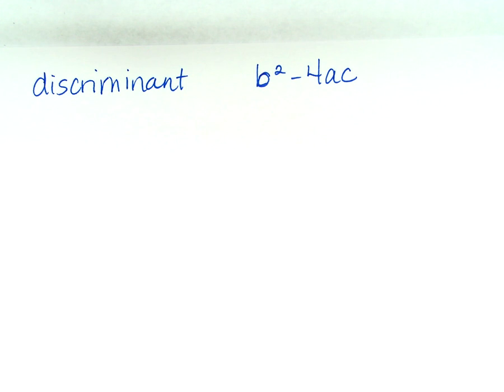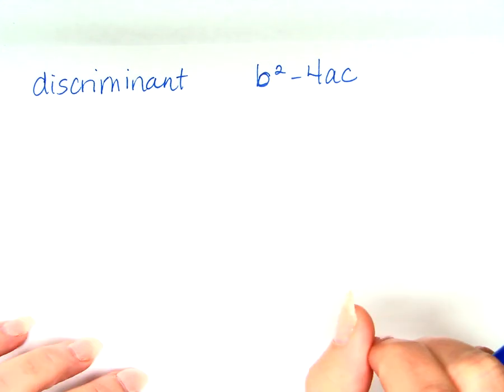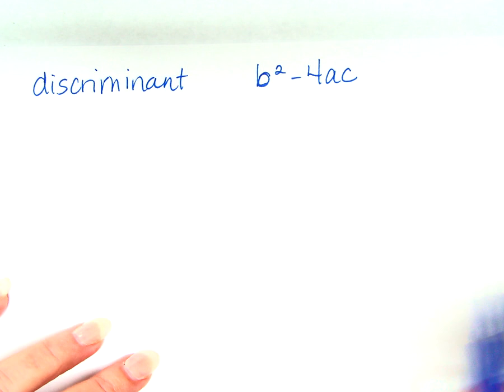Well, in order to be able to do the discriminant, to use this formula for the discriminant, what do you have to know? A, B, and C, right? Where do I get that from?